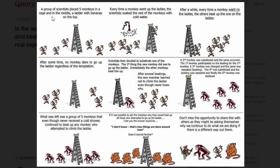Basically, a group of scientists placed five monkeys in a cage, and in the middle a ladder with bananas on the top. Every time a monkey went up the ladder, the scientists soaked the rest of the monkeys with cold water. After a while, every time a monkey went up the ladder, the others beat up the one on the ladder. After some time, no monkey dared to go up the ladder regardless of the temptation.